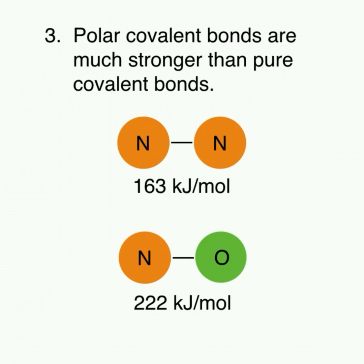Lastly, the strength of a covalent bond is affected by polarity, as polar covalent bonds are much stronger than pure covalent bonds. We can see in our example that a dinitrogen molecule has a lower bond dissociation energy than a nitrogen oxide molecule. This is because oxygen is more electronegative than nitrogen, and thus, the two atoms create a polar covalent bond.